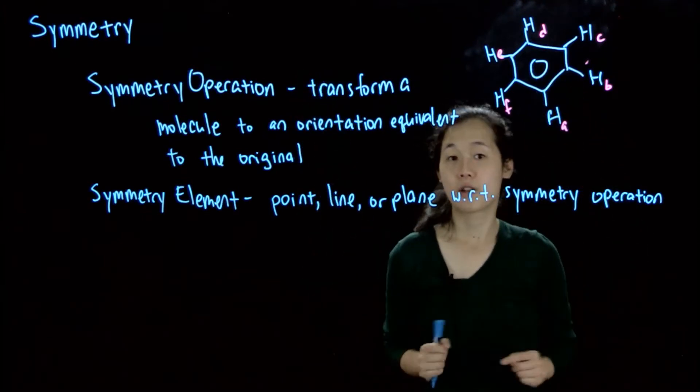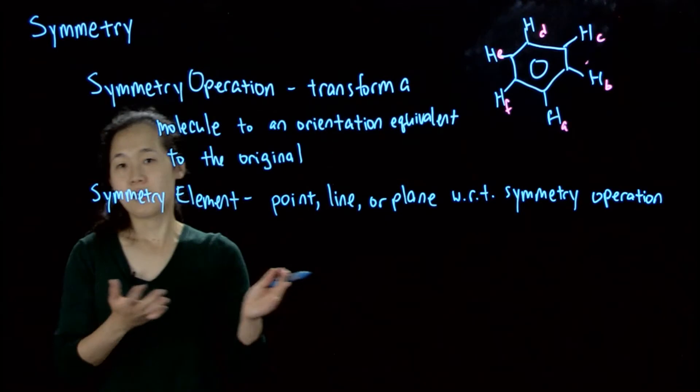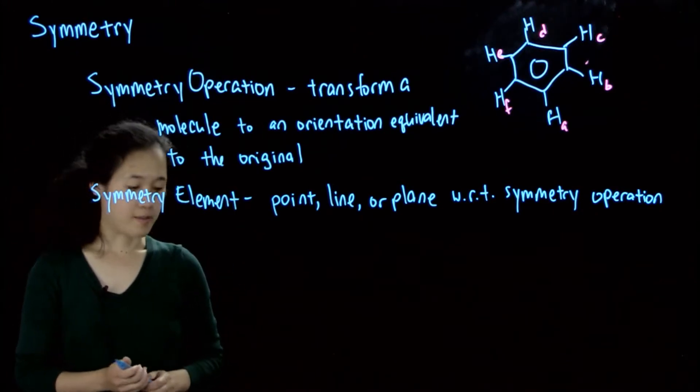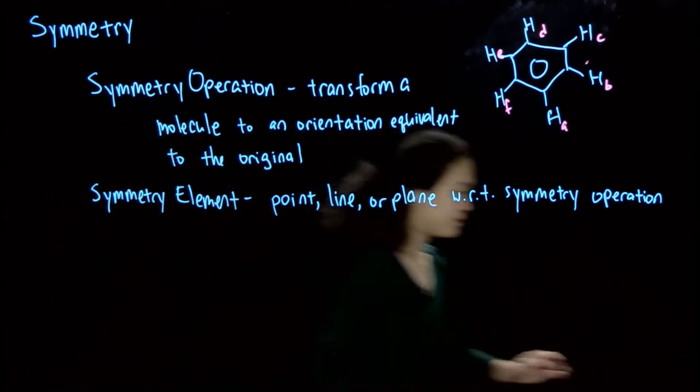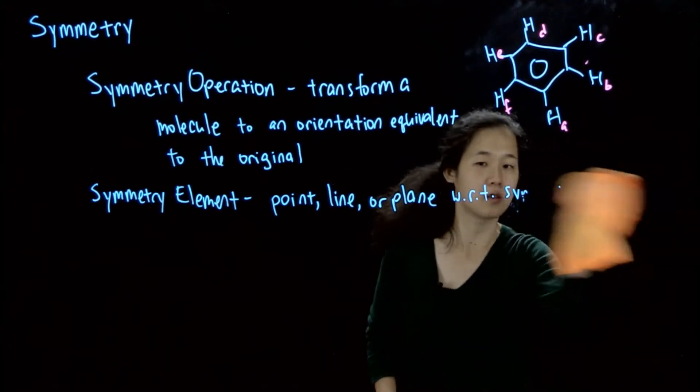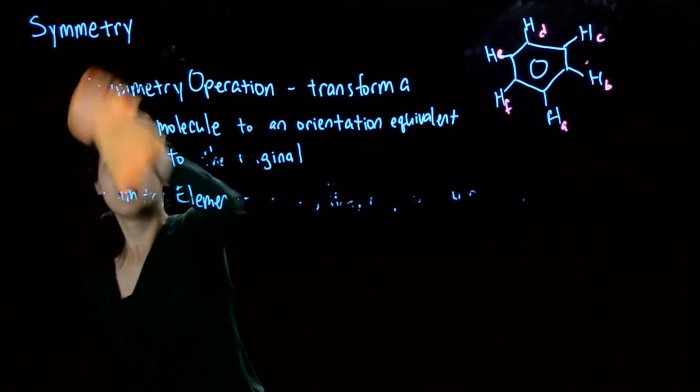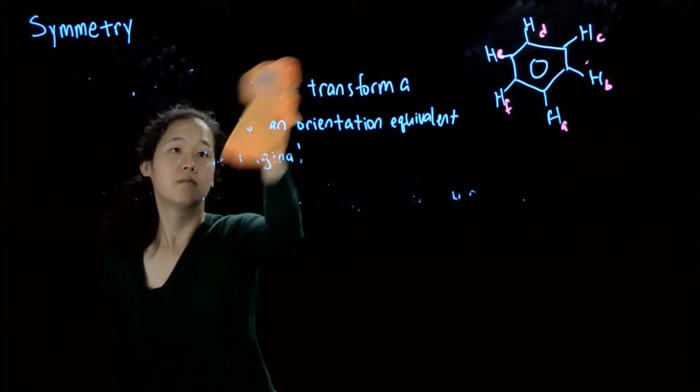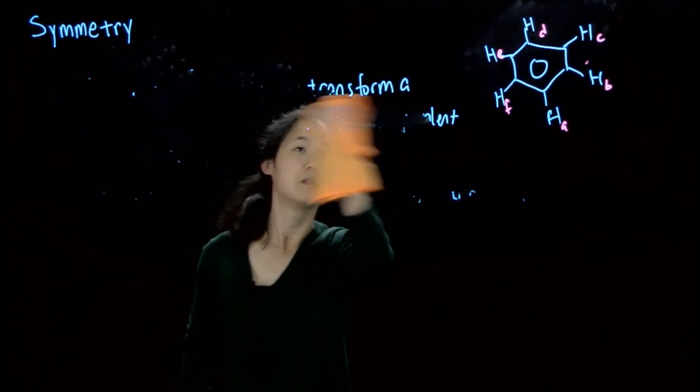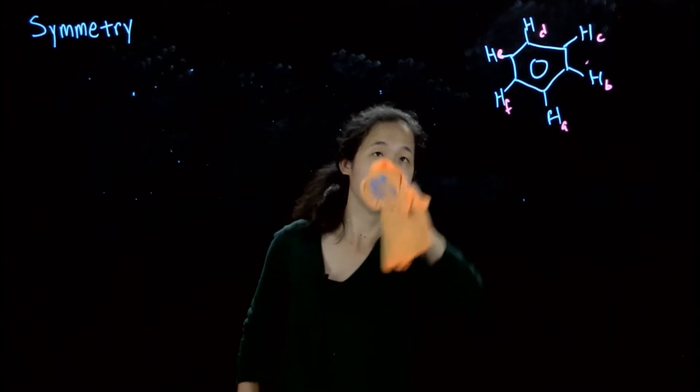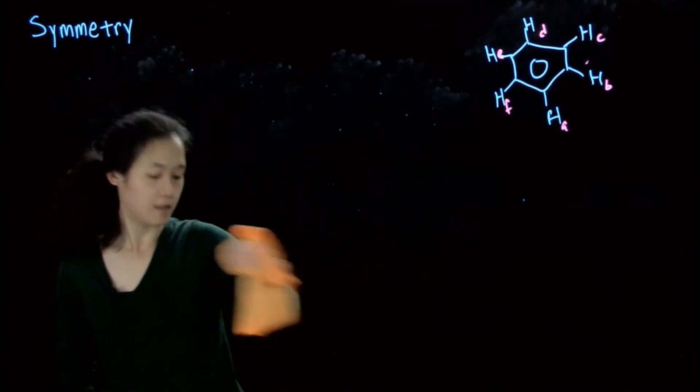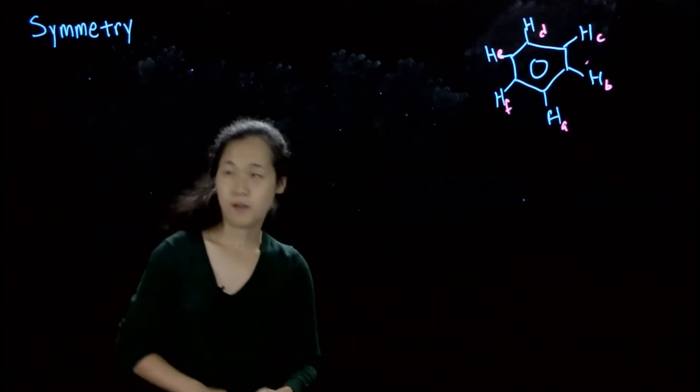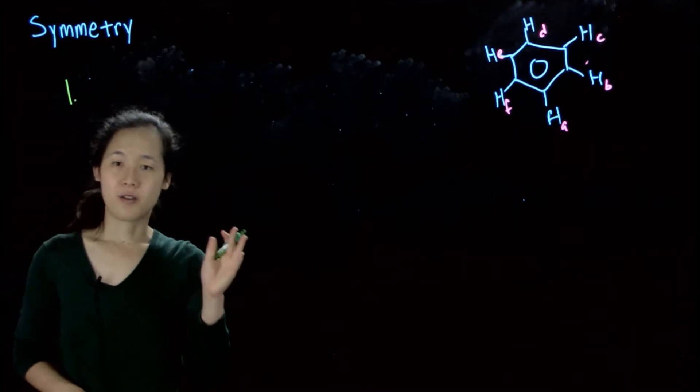So that's what's called the symmetry element about which we are performing this rotation operation. And so the goal of this class and the next couple lectures is going to be able to identify in a molecule what symmetry elements are there, and then from there how to use them to transform the molecules themselves. So let's go through a couple examples.